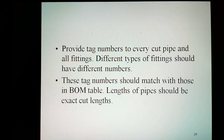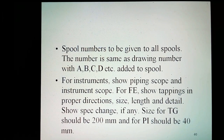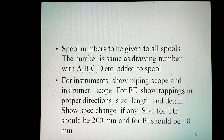Check sizes of all fittings per standard. Check proper symbols for gate, globe, and check valves. Provide tag numbers to every cut pipe and all fittings — different types of fittings should have different numbers, and these tag numbers should match those in the line table. Lengths of pipes should be exact cut lengths. Spool numbers should be given to all spools — the number is the same as the drawing number with A, B, C, etc. added to the spool. For instruments, show P&ID scope and instrument scope. For FE, show tapping in proper directions. Show spec change. Size for T should be 200 mm and for pipe should be 40 mm.